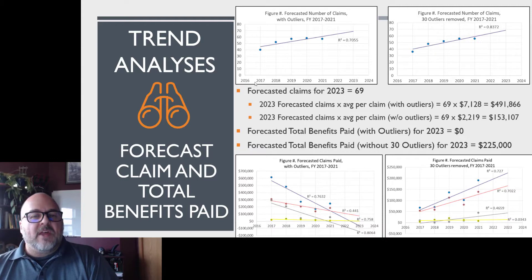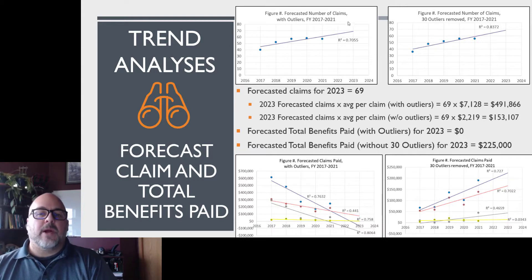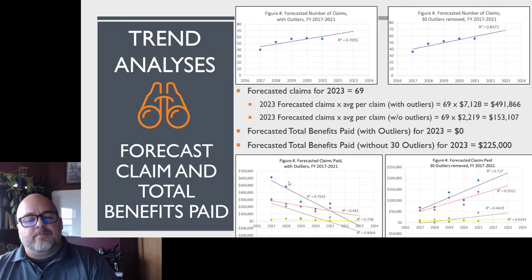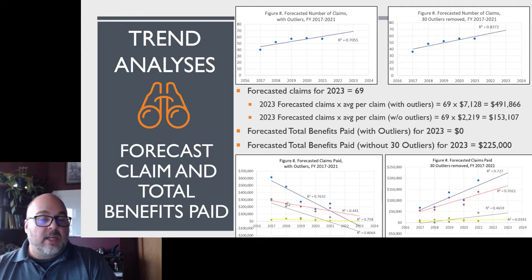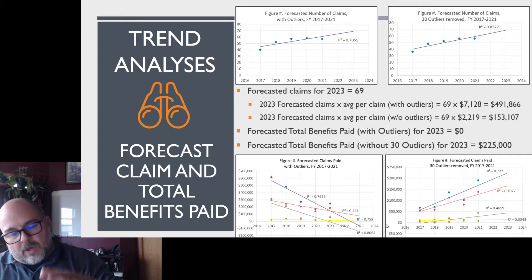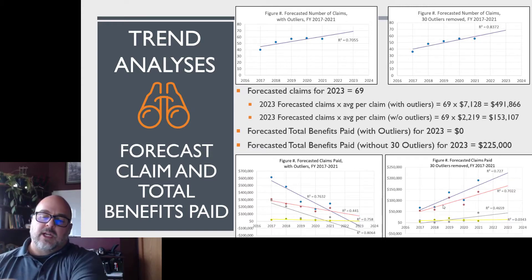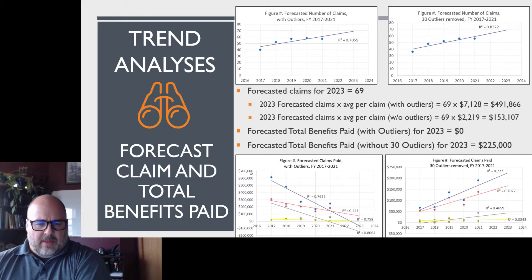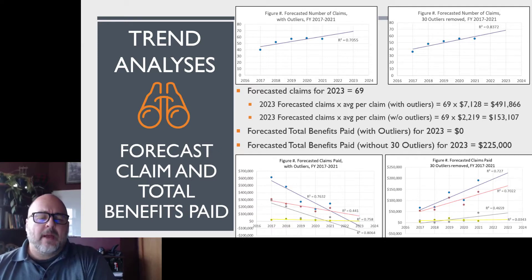Then we did the trend analysis — with and without outliers. Here's a comparison of before and after. This was the biggest difference: due to outliers, expensive claims being in 2017 and 2018 made everything look like it's going down. We removed those and now it looks like there's an increase in cost. But look at the axes — the high here was $700,000, and this one is only $250,000.